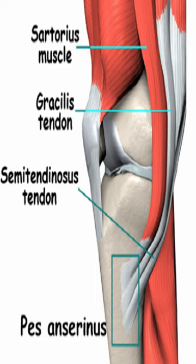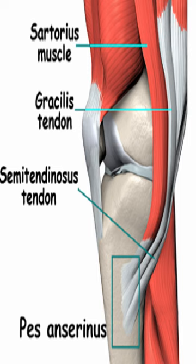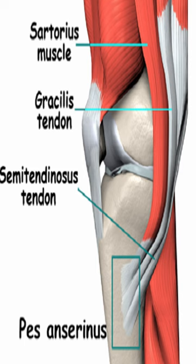PES anserine bursitis is most common in young athletes, overweight middle-aged females, and individuals with knee arthritis. The PES anserine is located two to three inches below the kneecap on the inner aspect of the front of the upper shin. It is the spot where the tendons of three large thigh muscles attach to the tibia: the sartorius, gracilis, and semitendinosus muscles.